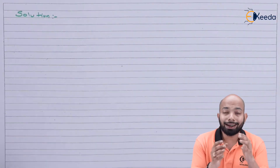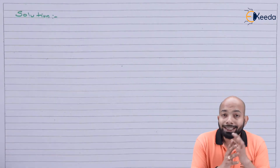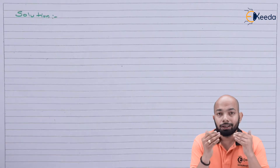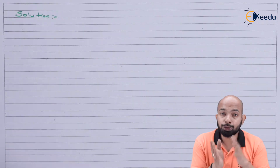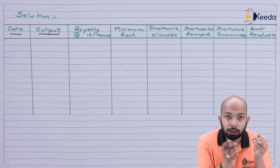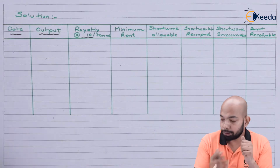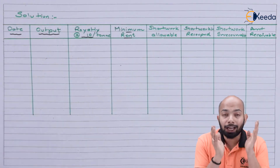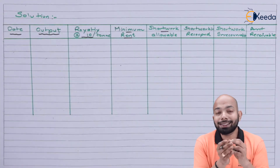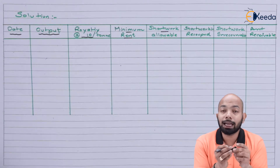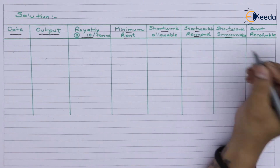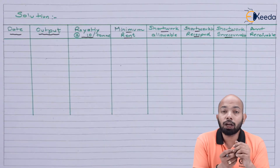Before we go ahead with the journal entries, let's figure out the computation of all the royalties, minimum rent, and short workings. I've set up a table: the first column is the date, second is output, third is royalty, fourth is minimum rent, fifth is short working allowable, sixth is short working adjusted, the second-last column is short working irrecoverable, and the last column is the amount receivable from the lessee.